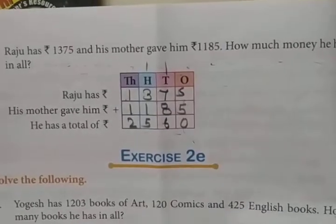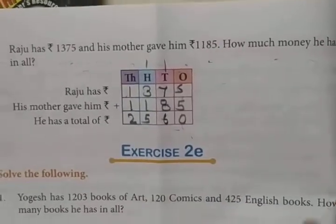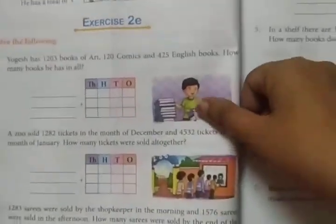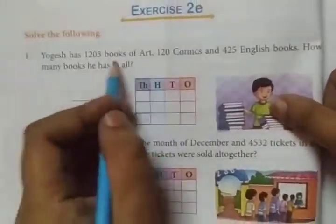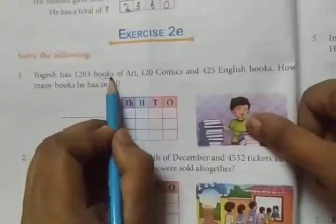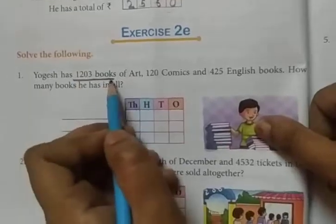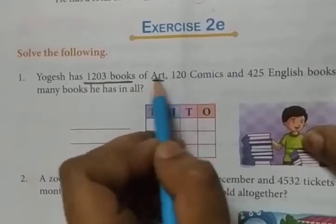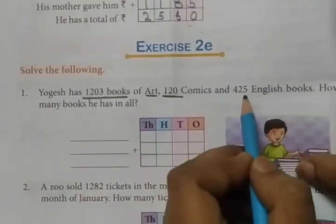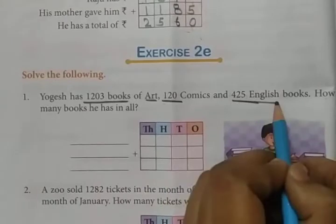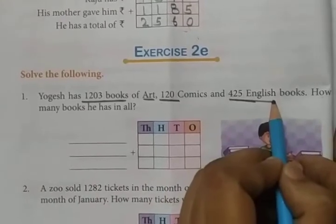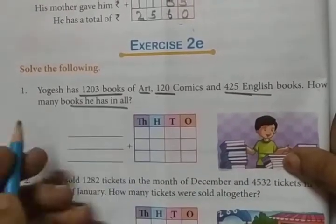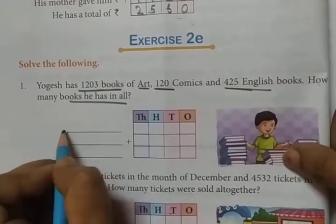Is it clear, class? In the same way, you will do these questions also. Yogesh has 1203 books of art, 120 books of comics, and 425 books of English. How many books does he have in total? You will write each category, then add them all together to get the answer.